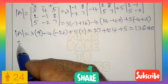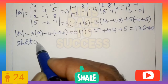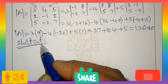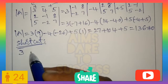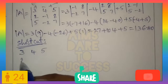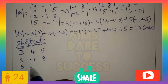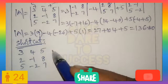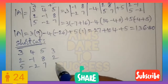Next, apply the shortcut to get the adjoint of A. My dear students, without this shortcut you will not get the answer easily and within a short time. So I am writing the A matrix again: 3, 4, 5 / 2, −1, 8 / 5, −2, 7. Again, the first column you can write as it is: 3, 2, 5.